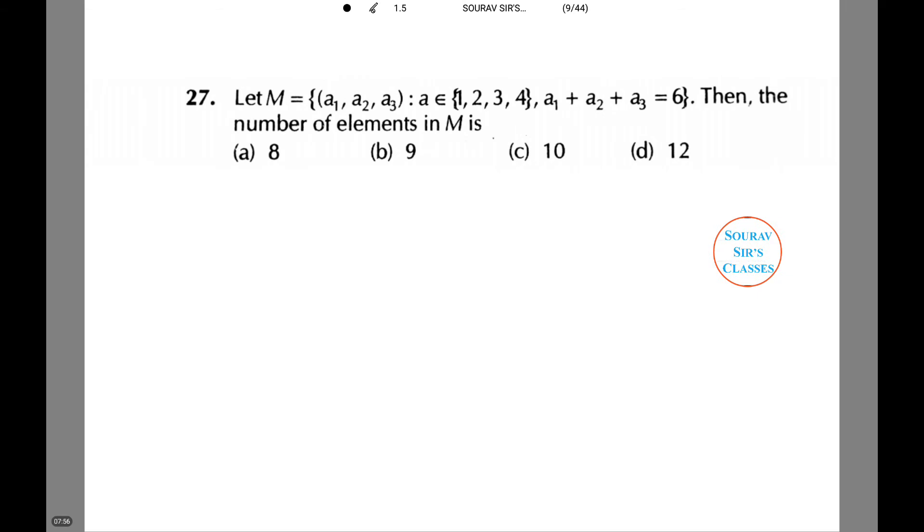Next question: we have M = {(a₁, a₂, a₃) where aᵢ belongs to {1, 2, 3, 4} and a₁ + a₂ + a₃ = 6}. Then the number of elements in M is, let us find out M equals {(a₁, a₂, a₃)} such that aᵢ belongs to {1, 2, 3, 4} and satisfies the condition.